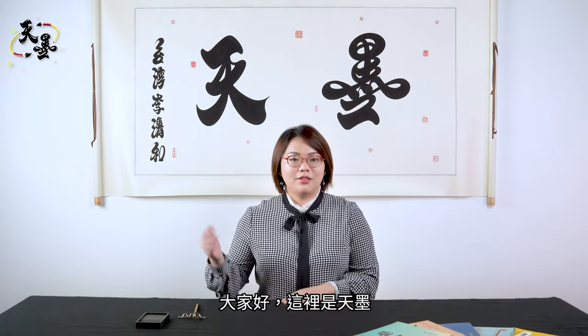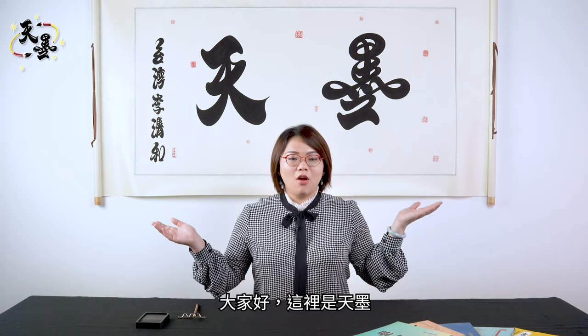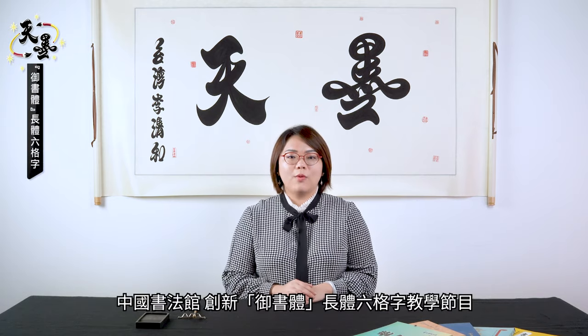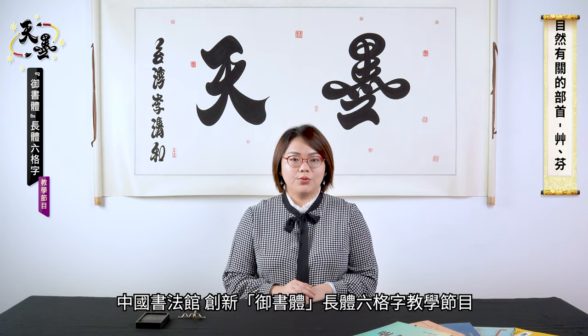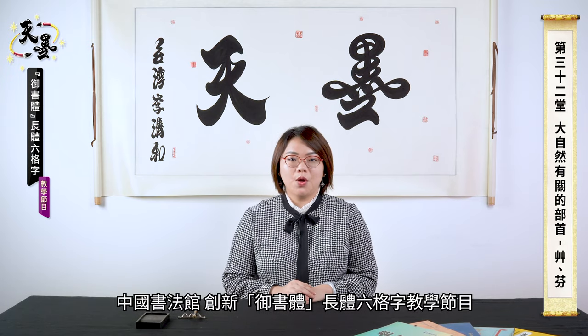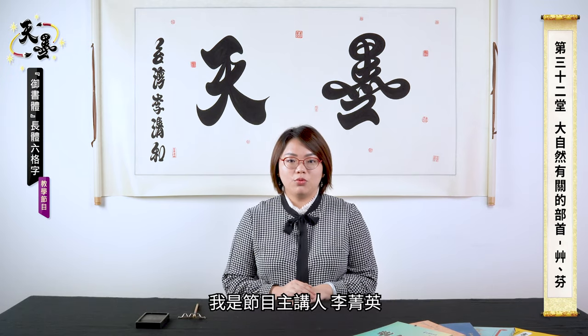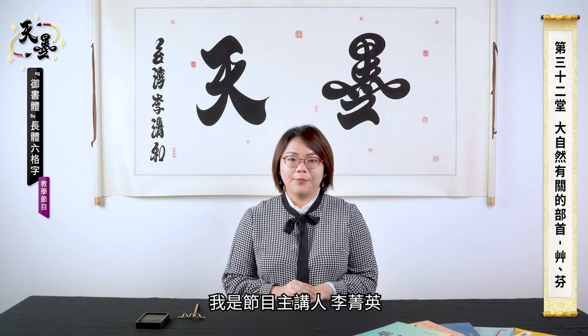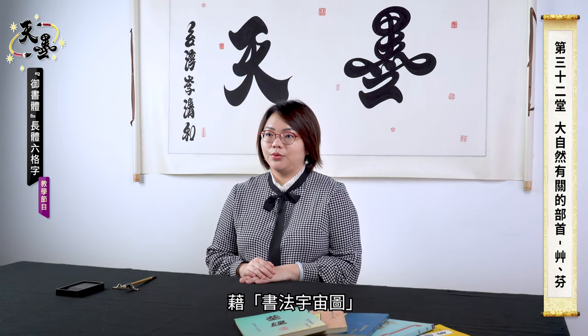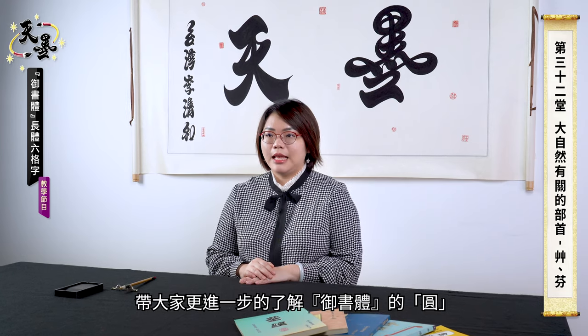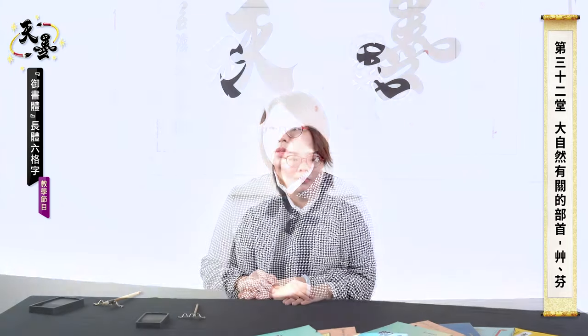Hello everyone, welcome to Tianmuo. This program is about rectangular 6-box grid calligraphy invented by the Chinese Calligraphy Academy. I'm the presenter Li Jingying. We have introduced calligraphy universal images and furthermore we know what is Yuan. Today let's talk about the character Long in Yu Shu Ti.